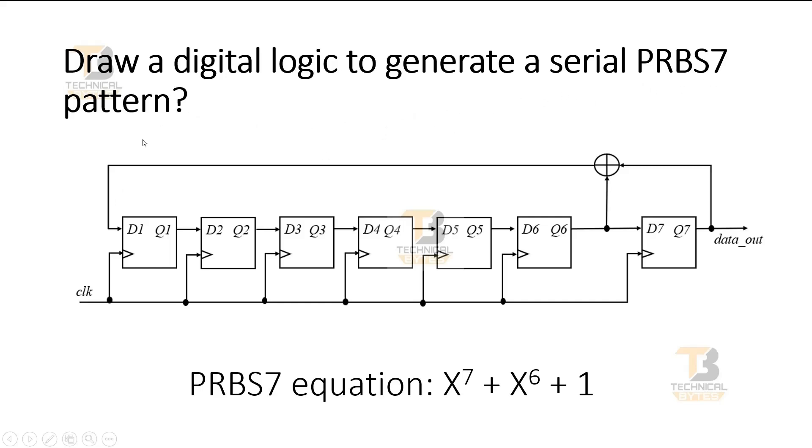All the possible combinations of 7 bits will appear at these 7 flip-flops. So with 7 bits, there are 2 to the power 7 combinations possible. So all the combinations will appear at the output of these flip-flops. And the exception is, all the flip-flops outputs will never go 0 at the same time.